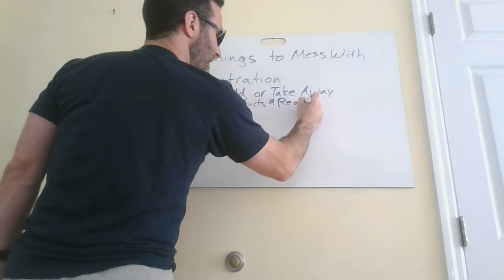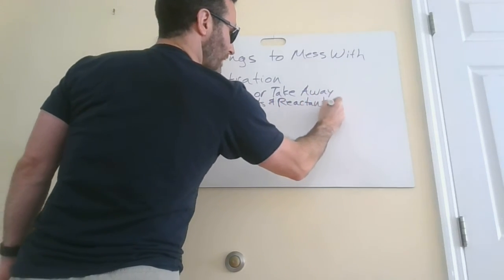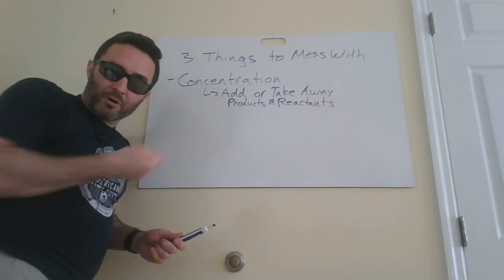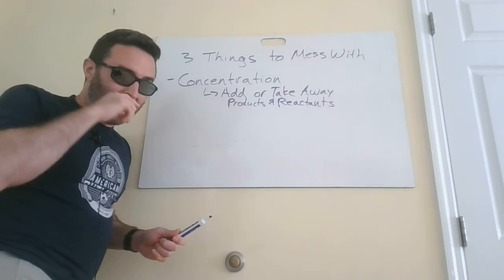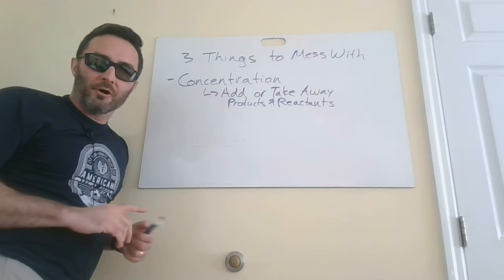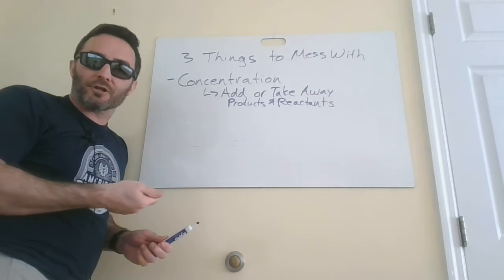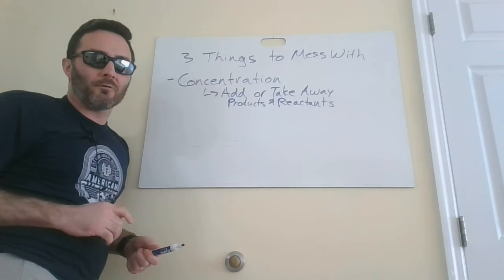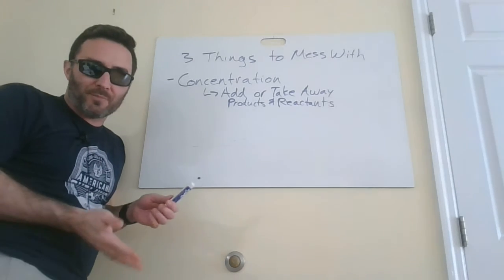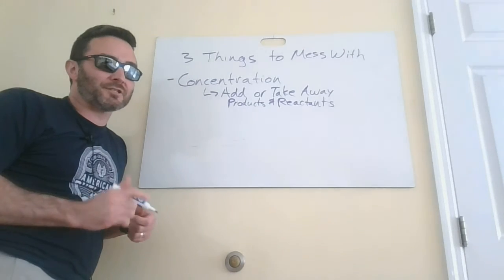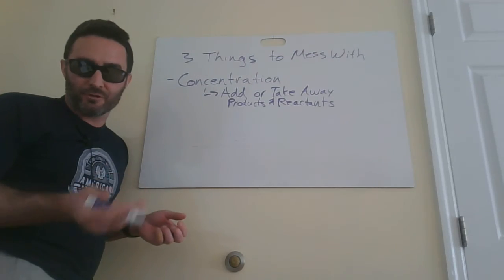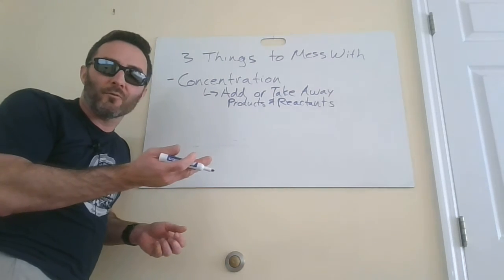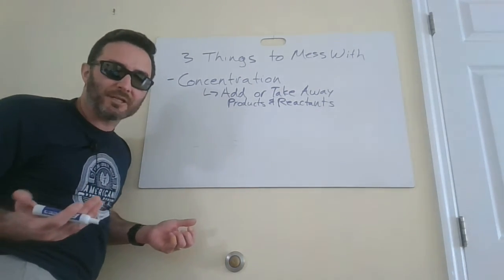If you think about things in a container where the reaction is at equilibrium, you could put a hose in there and add more reactants to kickstart the process again, or you could take a straw and try to suck something out. You can also change concentration by shrinking things. Concentration is moles divided by volume, so if you can't add or remove stuff, just change the container.